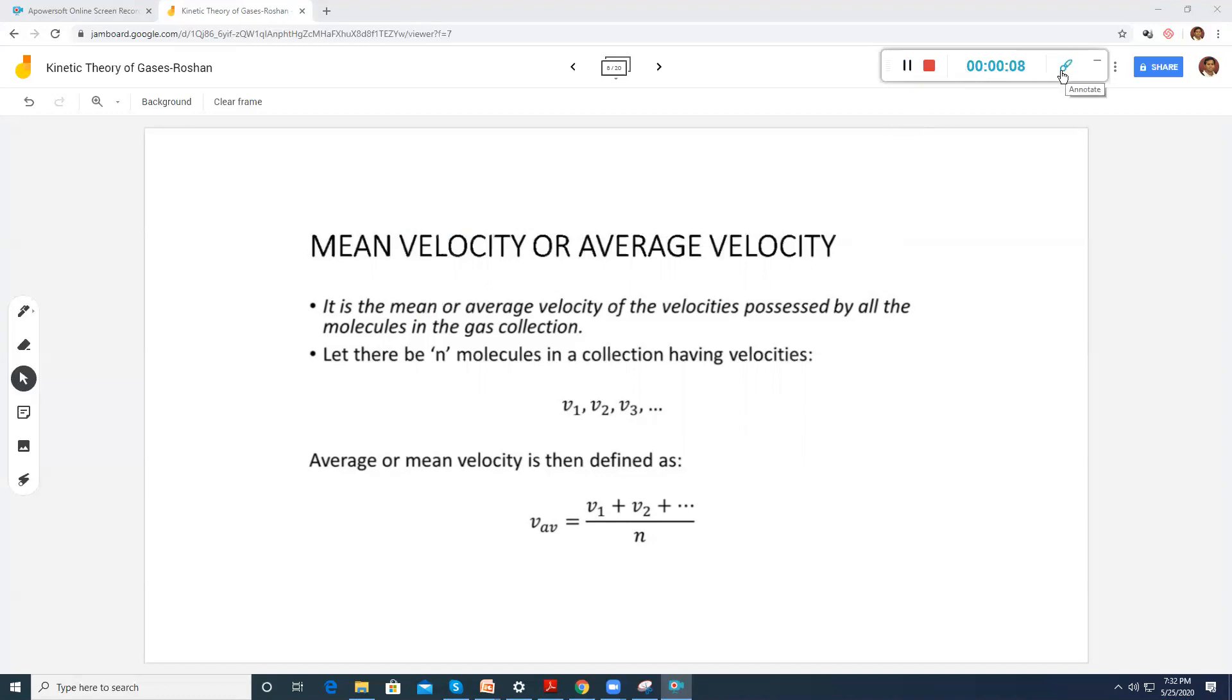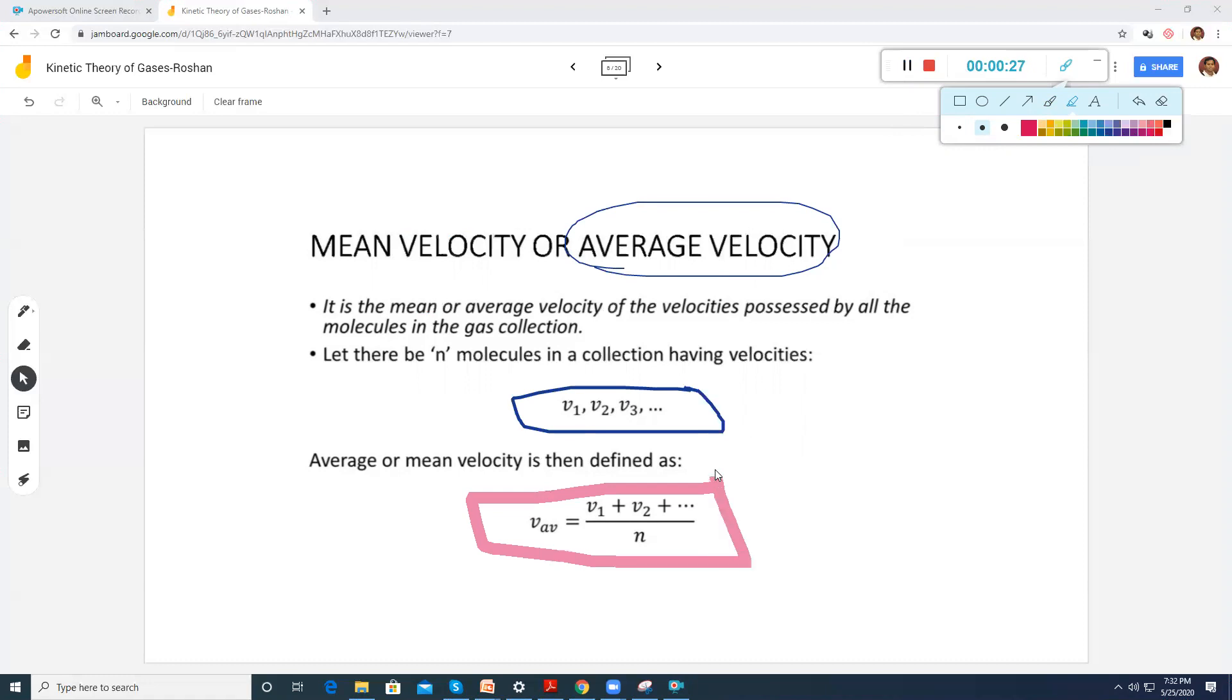Now this is the annotation tool that I am talking about. You can take this and you can start annotating. So let's say I am talking about the average velocity. You can change the size. You can say, these are the velocities something. Whatever you want to explain. You can also use the highlighter tool. You can change the color and then you can just highlight. This is the final one.